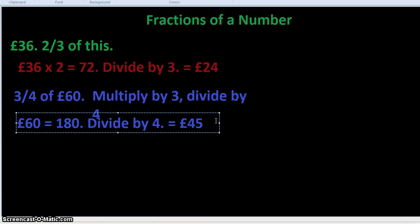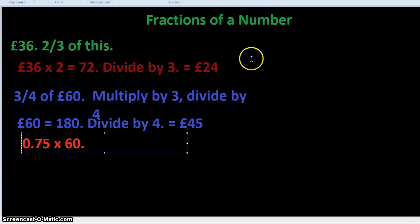So you see, the simplest way is to follow the procedure of multiplying by the top number and dividing by the bottom number. Now, if you have a calculator, or you want to do it a different way, you could work out what the fraction is as a decimal. So 3/4 equals 0.75, and then multiply 60 by 0.75. That is another way of doing it.